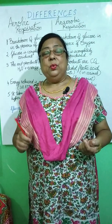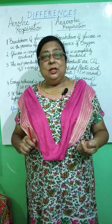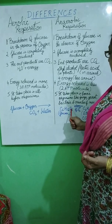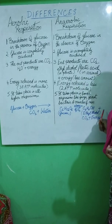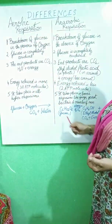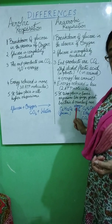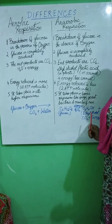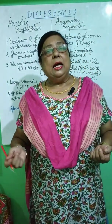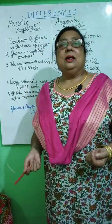In this type of respiration, which takes place in the absence of oxygen, glucose is partially broken down into ethyl alcohol. This is the equation of anaerobic respiration — glucose is partially broken down in the absence of oxygen to form ethyl alcohol, carbon dioxide, and energy. But the energy liberated during anaerobic respiration is very less compared to the energy liberated during aerobic respiration.